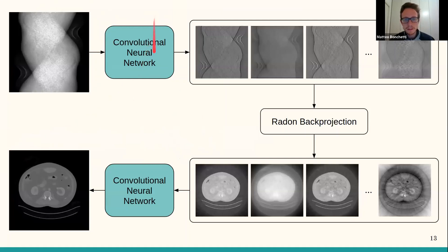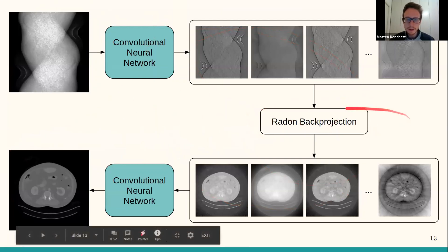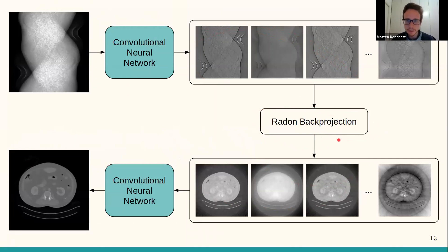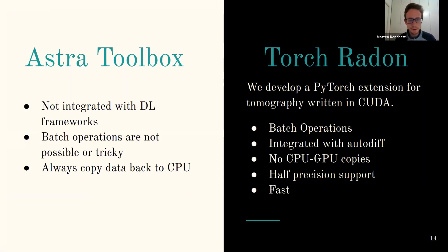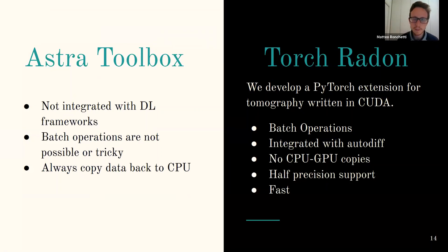Since Radon projection is an operation inside our neural network, we need a good implementation. Existing tools like the ASTRA toolbox are not integrated with deep learning frameworks, have no support for batch operations, and always copy data back to the CPU. If you are training a model on the GPU with batches already in GPU memory, this copy is very expensive and slow. So we developed a PyTorch extension written in CUDA that implements Radon transforms.